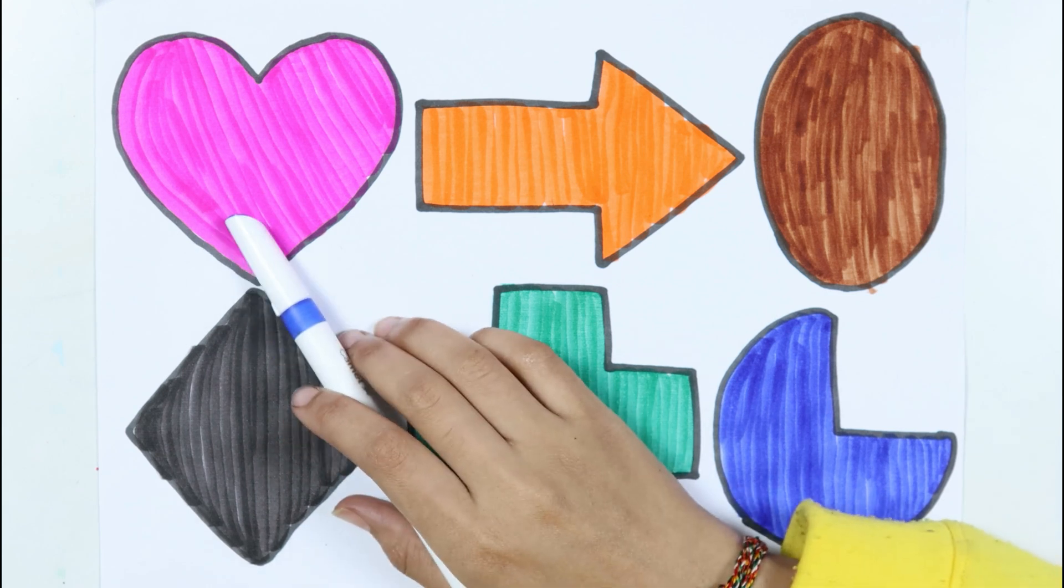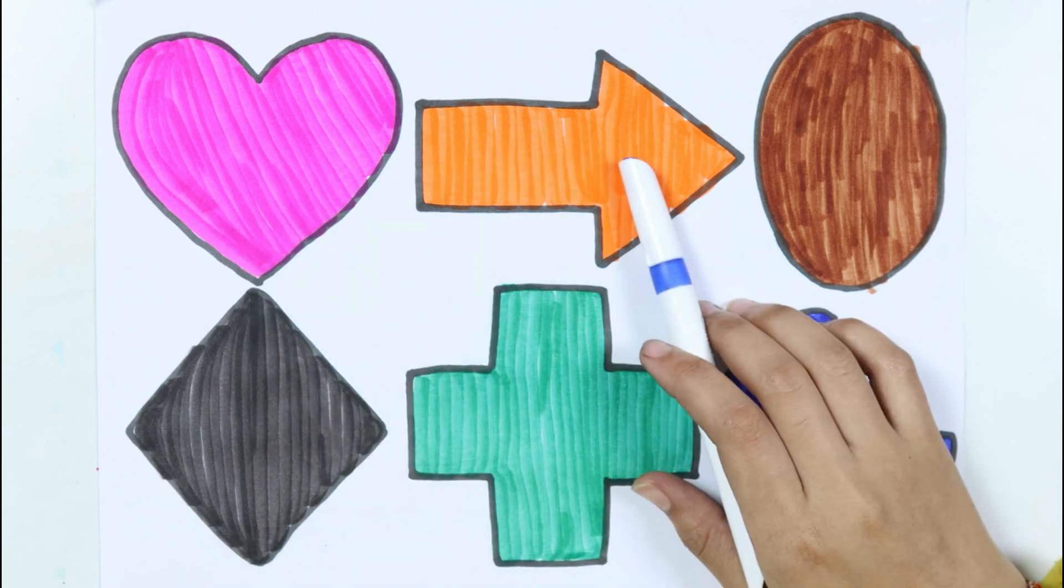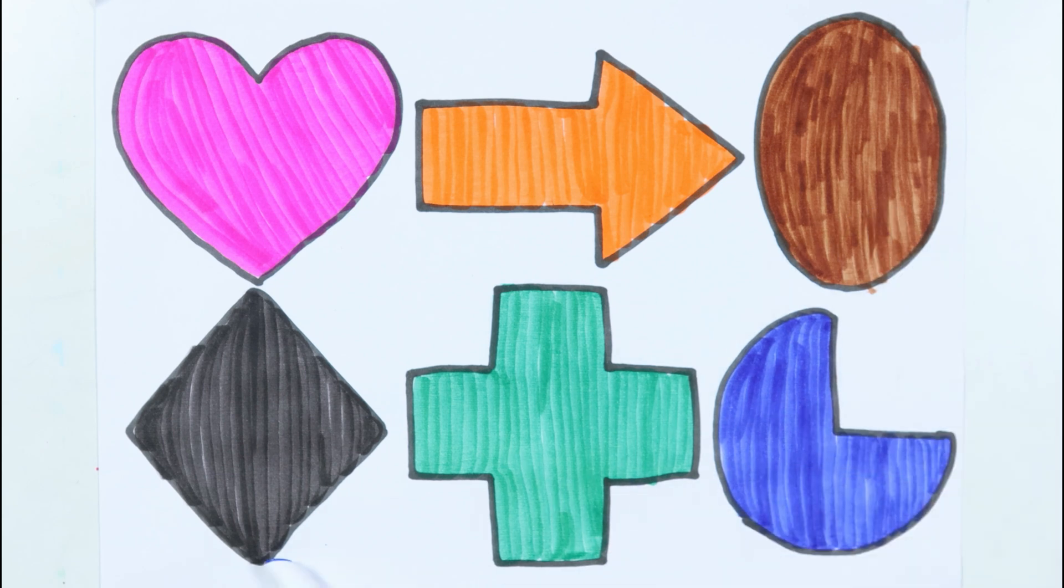Heart. Arrow. Ellipse. Rhombus. Cross. Pie.